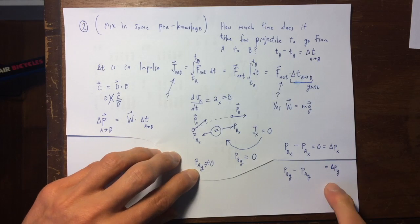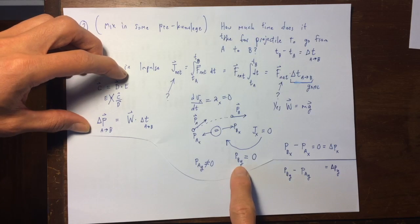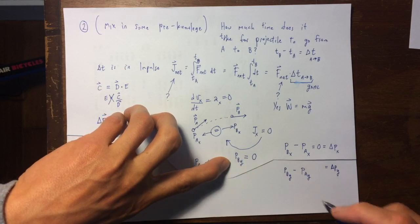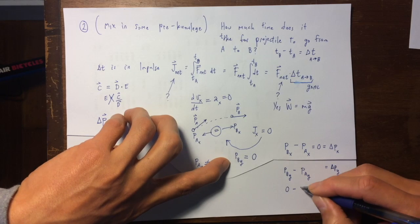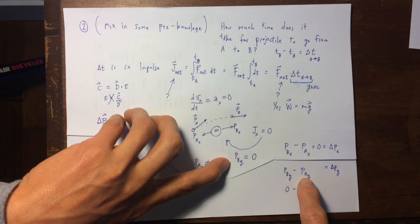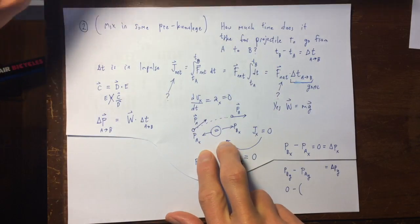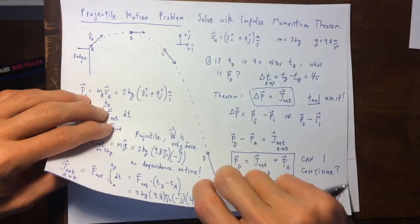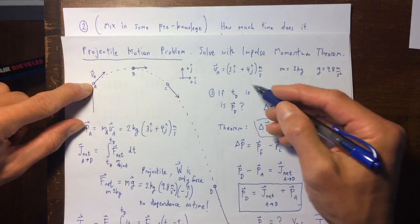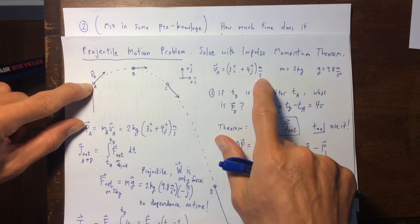So we can do delta p sub y next. So delta p sub y is not going to be zero this time, because delta a sub y and delta b sub y, the later and the former times, they do not have the same value, so their difference is not going to be zero. So let me just put this in here, so p sub b sub y minus p sub a sub y.